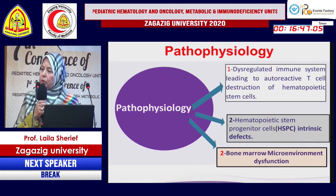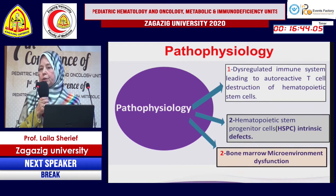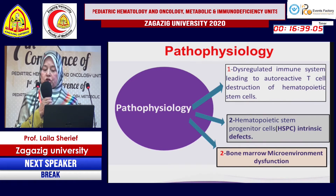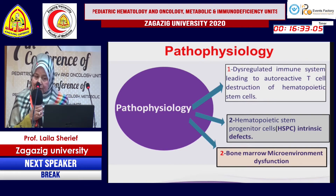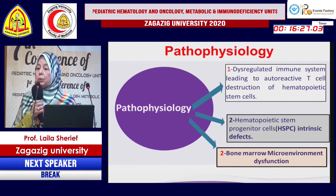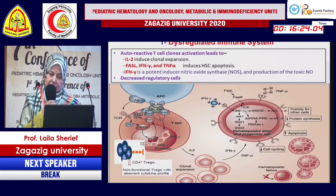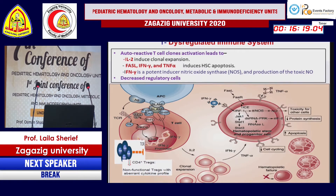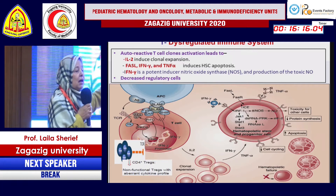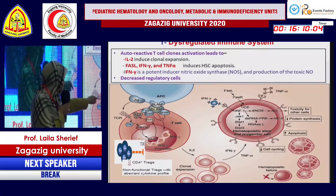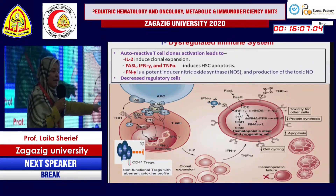Regarding the pathophysiology of acquired aplastic anemia, multiple factors play a role. A dysregulated immune system is very important, leading to autoreactive cytotoxic T cells which cause destruction of hematopoietic stem cells. The inciting agent triggers an abnormal immune response, taken up by antigen-presenting cells and then passed to T cells where it activates T-bet.